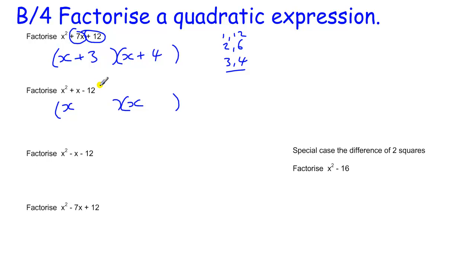So we've got essentially the same numbers here, but they're going to multiply to give you minus 12. That means one of them must be negative. And then when we add them, we get plus x.